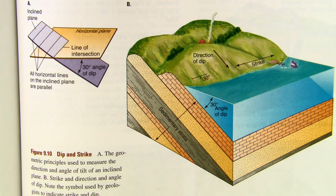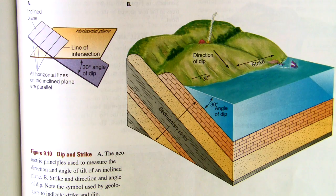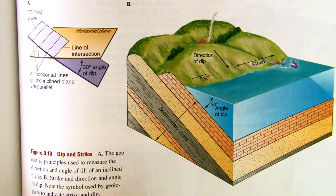Strike and dip are used when we're mapping an area that has layers of rocks that come up at the surface at an angle as we see here in this cartoonogram.